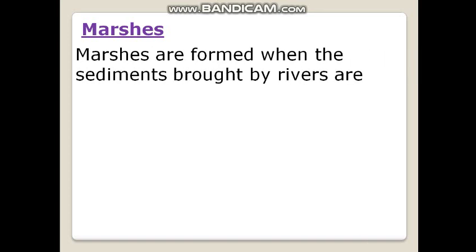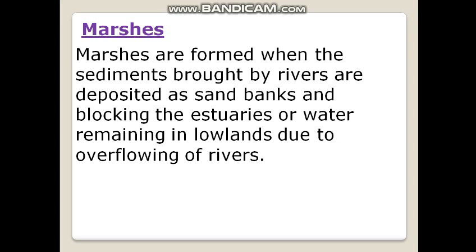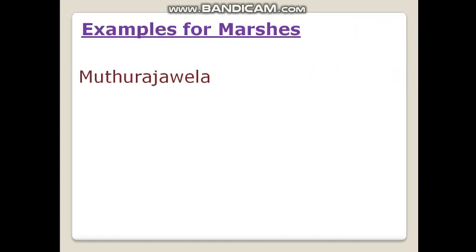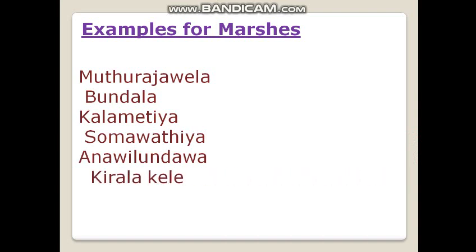Now we will discuss about the marshes. Marshes are formed when the sediments brought by rivers are deposited as sandbanks and block the estuaries, with water remaining in lowlands due to overflowing of rivers. Examples: Muttarajawela, Bundala, Kalamatiya, Somavatiya, Aanavilundawa, and Kirilahali.